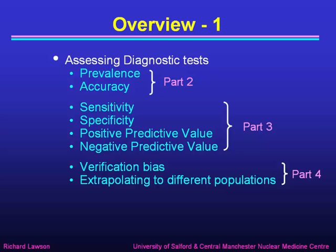In part three I'll talk about sensitivity, specificity, positive predictive value and negative predictive value. Those may well be terms that you've seen in the scientific literature and I hope to explain what they mean. In part four we'll be extending that to look at topics of verification bias and how we can extrapolate to different populations.